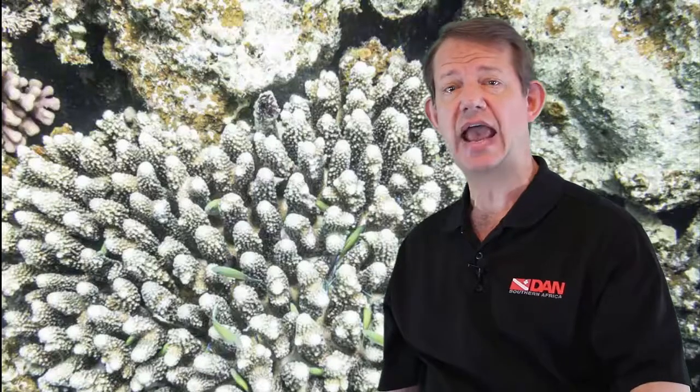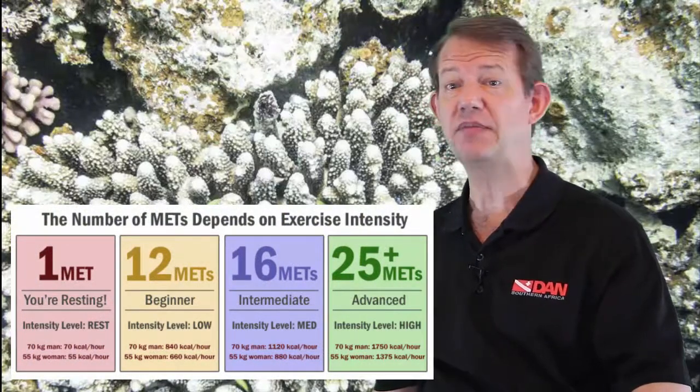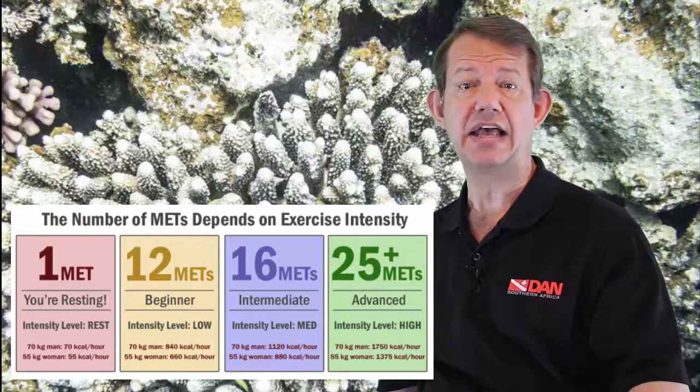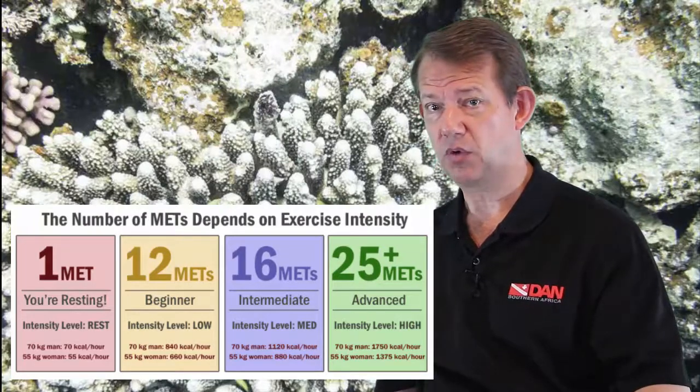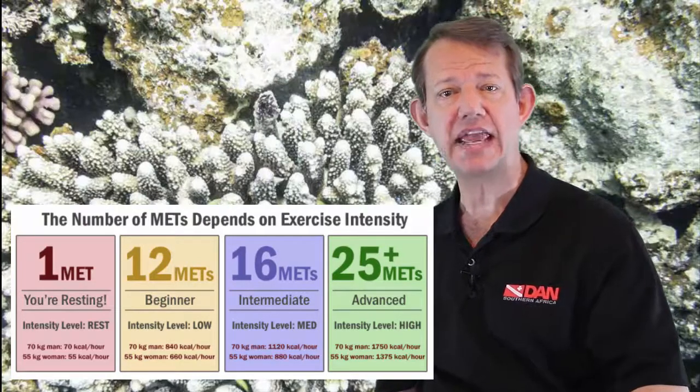The amount of energy you use at any given time is proportional to the amount of oxygen your body requires. At rest, a healthy person only extracts about 3.5 ml of oxygen per kilogram of body weight per minute, and this is known as resting metabolic rate. The energy cost of physical activity can be expressed as a multiple of this resting metabolic rate, and is known as metabolic equivalent of task, or metabolic equivalent, abbreviated as MET.